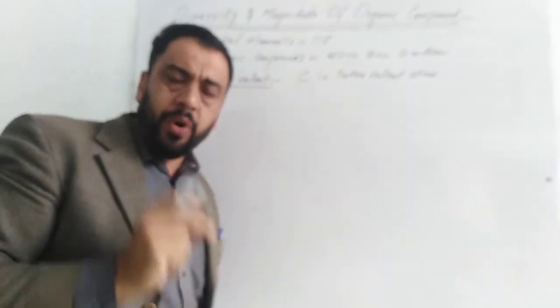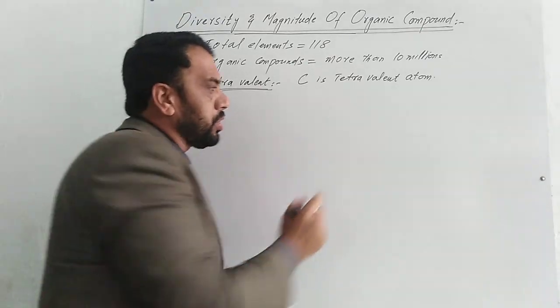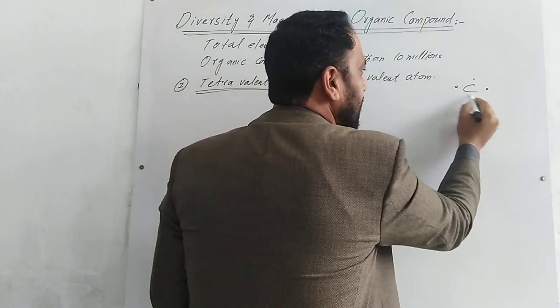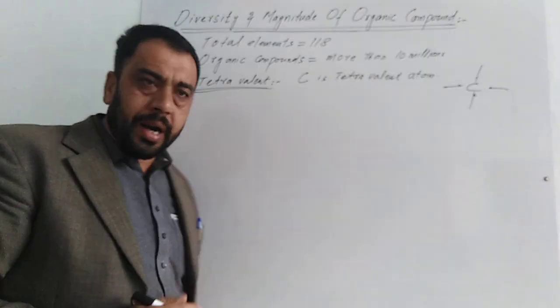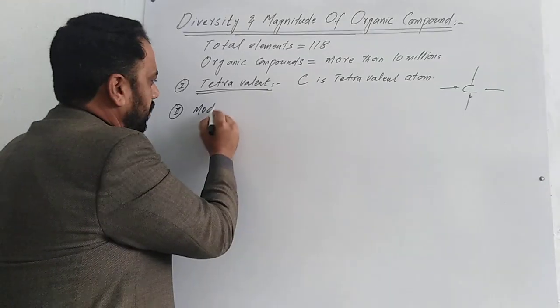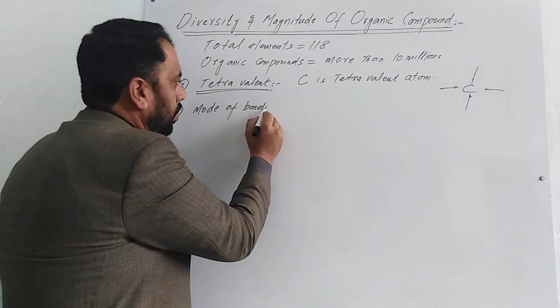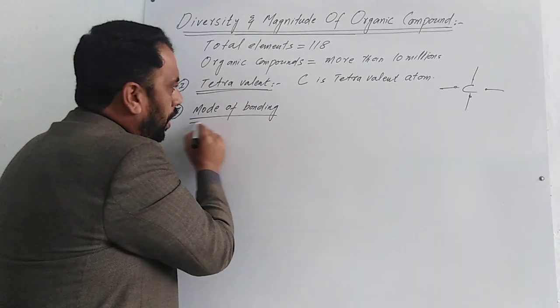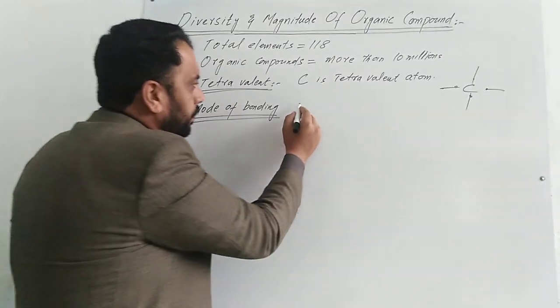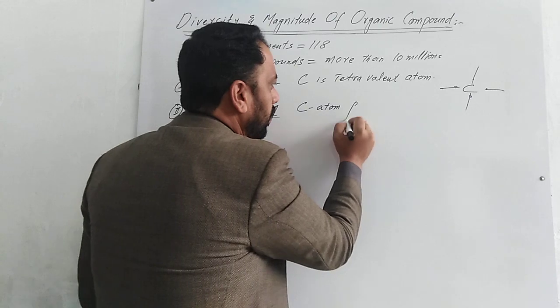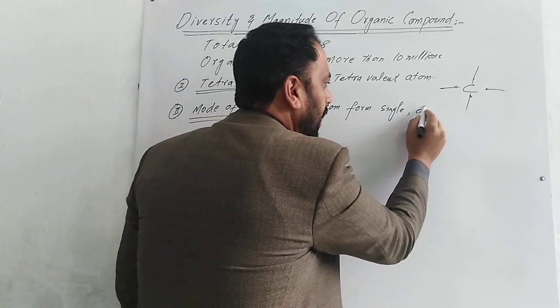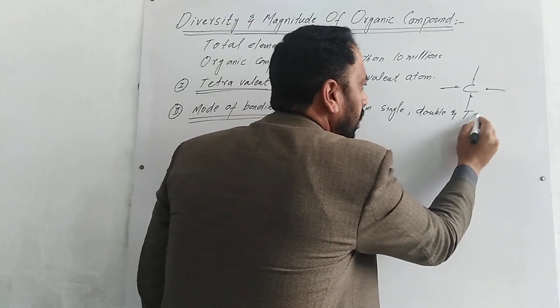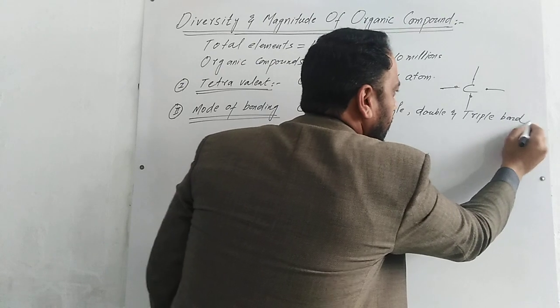The second one is multiple bonding. The carbon atom forms single bonds, double bonds, and triple bonds.